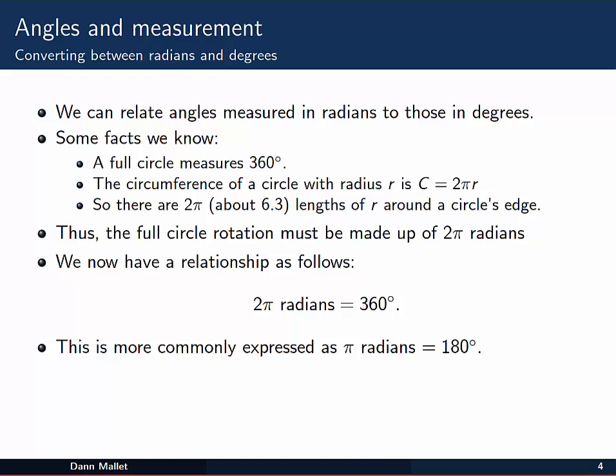So let's look at a couple of facts that we already know. We've heard in the past that a full circle measures 360 degrees. We also know a formula for the circumference of a circle. Now remember that the circumference, that's the length all the way around the edge of the circle. In other words, an arc that actually is the whole circle. So the circumference equation says that C, the circumference, is equal to 2π multiplied by r, the radius. So in other words, there's 2π, which is about 6.3, 2π lengths of the radius around the circle's edge.